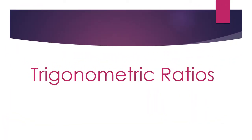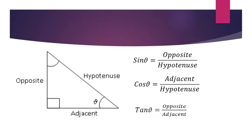We'll start by looking at different trigonometric ratios. We'll consider a right-angled triangle. In this right-angled triangle, one of the angles is theta, and then we have the opposite side, the adjacent side, and the hypotenuse. From trigonometric ratios, we say sin theta is opposite over hypotenuse, cos theta is adjacent over hypotenuse, tan theta is opposite over adjacent.